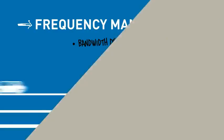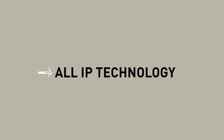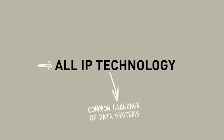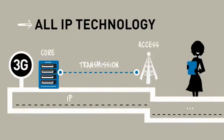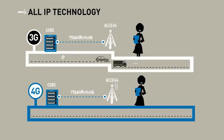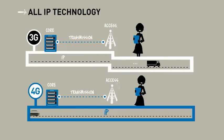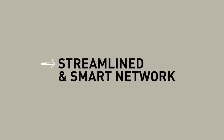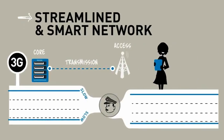Also, 4G uses all-IP technology. This is the common language of data systems. A 3G network uses different languages to transport data over the network to the customer, whereas a 4G network uses only one single language to transport data — all IP.